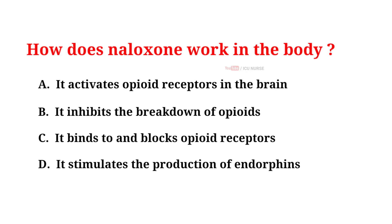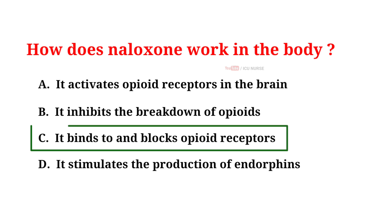How does Naloxone work in the body? A. It activates opioid receptors in the brain. B. It inhibits the breakdown of opioids. C. It binds to and blocks opioid receptors. D. It stimulates the production of endorphins. And the correct answer is C — it binds to and blocks opioid receptors.